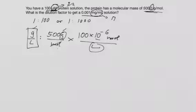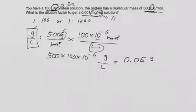So we can use that and we can say we have 500 times 100 times 10 to the minus 6 gram per liter. We can simplify that and that gives us 0.05 gram per liter. That is the first step.